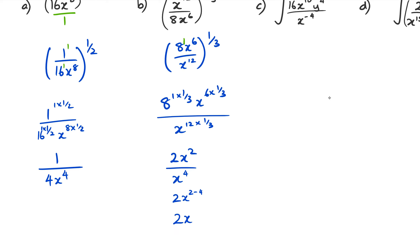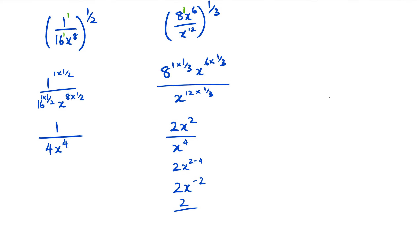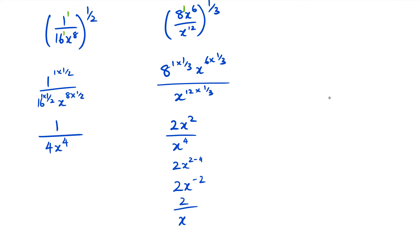So this equals 2 times x to the power of negative 2, which of course can be written as 2 over x squared. If you're comfortable going directly to that final answer, then by all means you can do that — you don't need to do all this extra working.